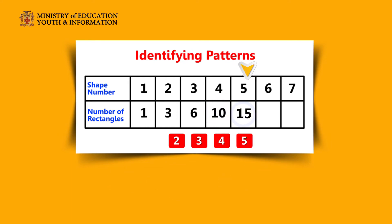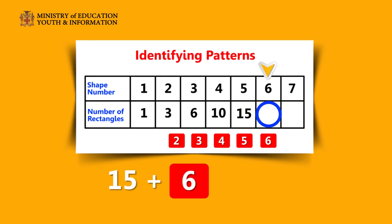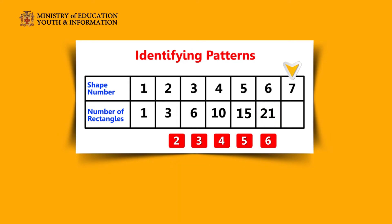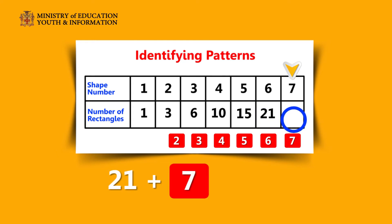And shape 6 would increase by 6 rectangles, so 15 plus 6 equals 21. And shape 7 would increase by 7 rectangles, so 21 plus 7 equals 28. We did it! High five! Very good!